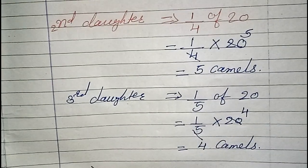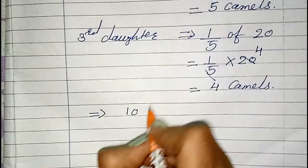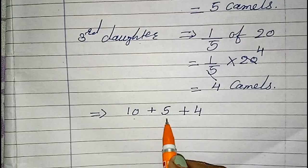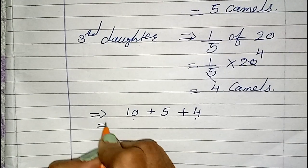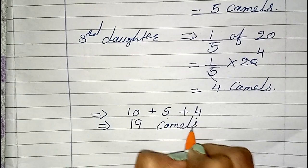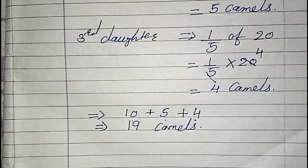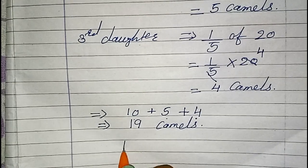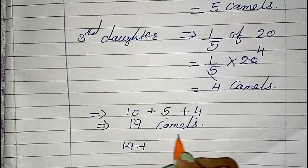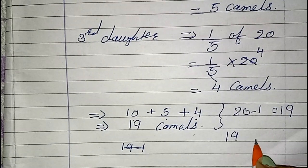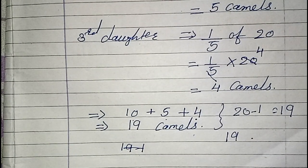So the first daughter gets 10, the second gets 5, and the third gets 4 camels. Total: 10 plus 5 is 15, and 15 plus 4 is 19 camels distributed. One camel remains from the 20. 20 minus 1 equals 19 — that remaining camel goes back to their aunt. So the aunt gets her camel back.